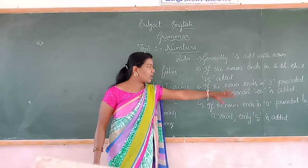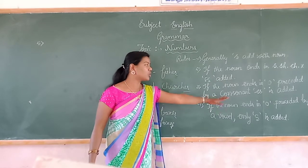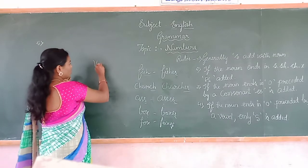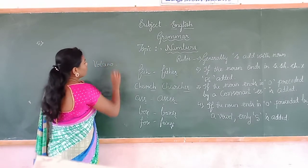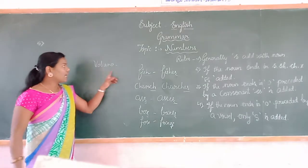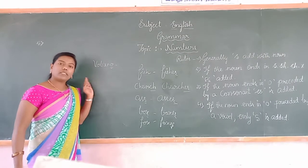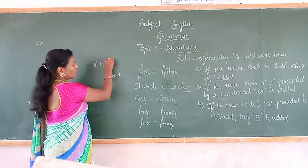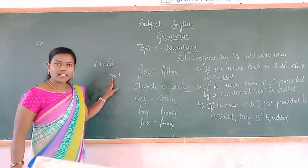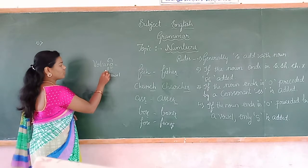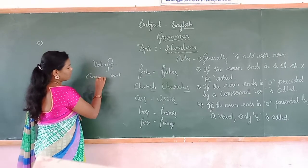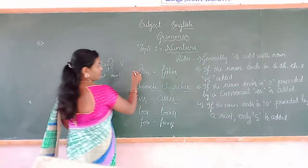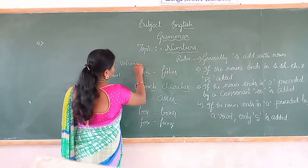Third rule: if the noun ends in O preceded by a consonant, ES is added. For example, 'volcano' ends with O. The letter before O is N, which is a consonant. So we add ES — making 'volcanoes.'